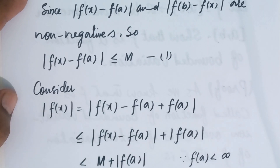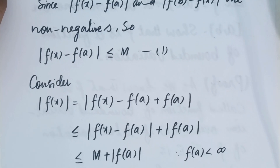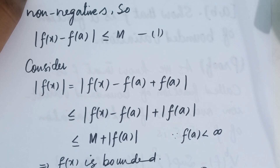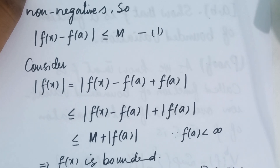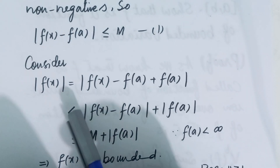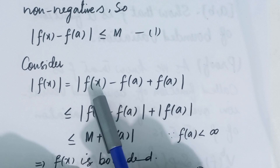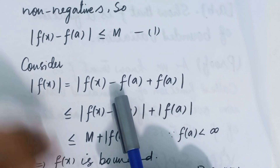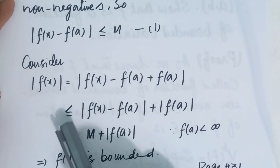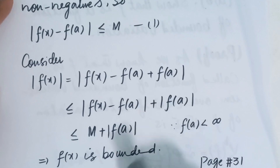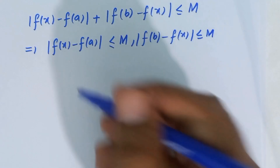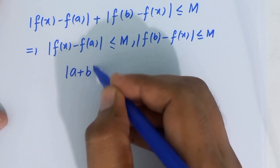Next, I am going to prove that f(x) is a bounded function. We know that a function f is called a bounded function if there exists a positive real number M such that |f(x)| ≤ M for every x in the domain of f. Consider: |f(x)| = |f(x) − f(a) + f(a)|. By the triangle inequality, this is less than or equal to |f(x) − f(a)| + |f(a)|.